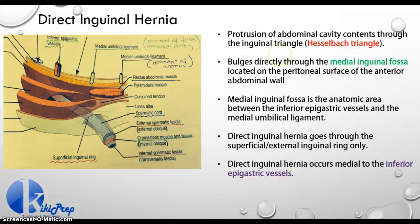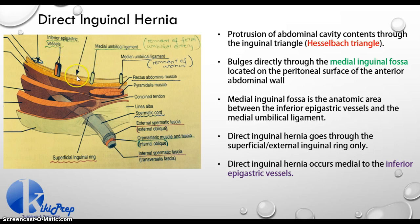Let's go on and talk about these two. In a direct inguinal hernia, what is happening is you have a protrusion of your abdominal cavity contents through your inguinal triangle, also called your Hesselbach's triangle. Your Hesselbach's triangle gives us something called your medial inguinal fossa, which is this region right here in between your inferior epigastric vessels and your medial umbilical ligament. This area right here where I have the arrow — that's my medial inguinal fossa.